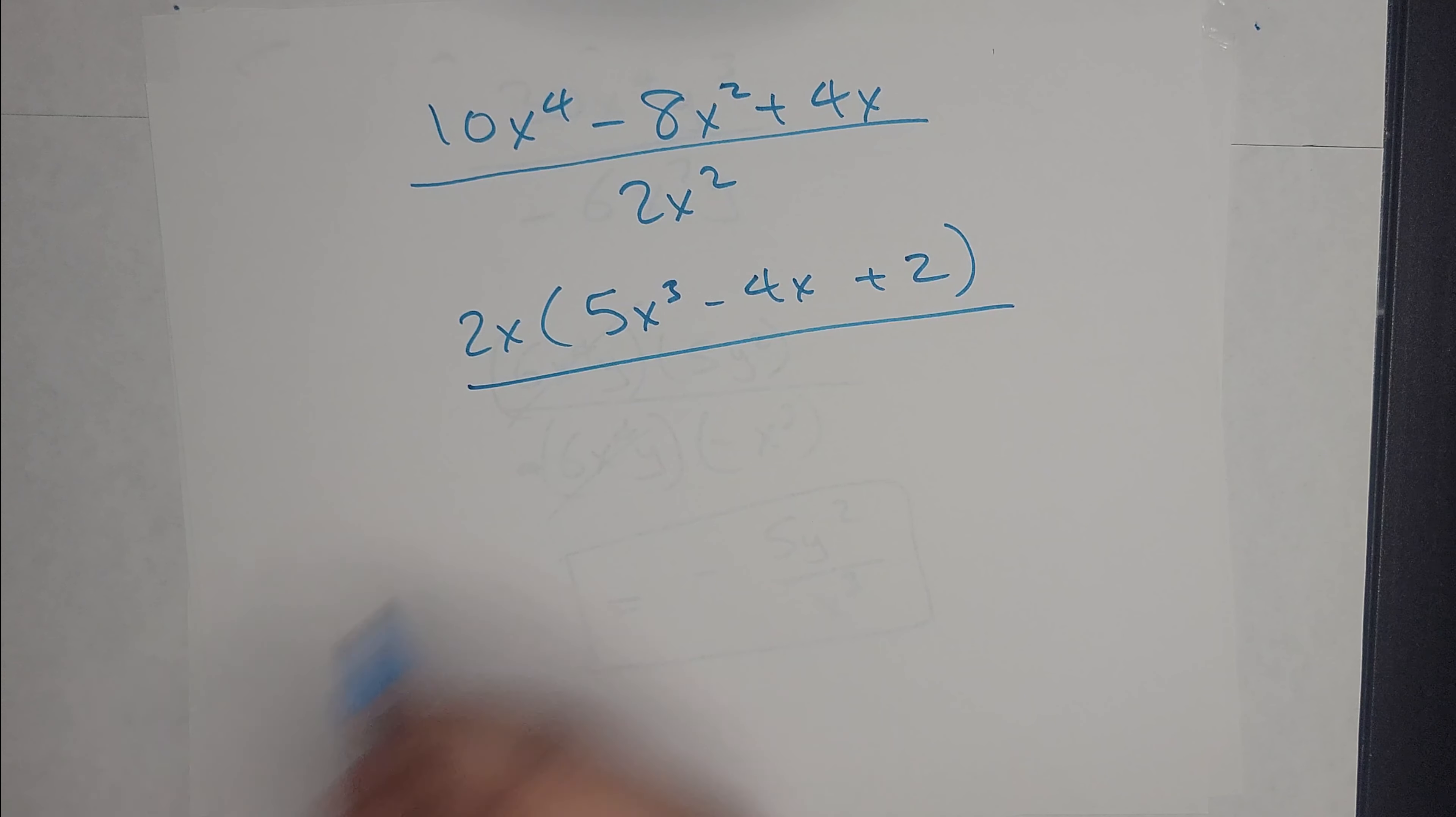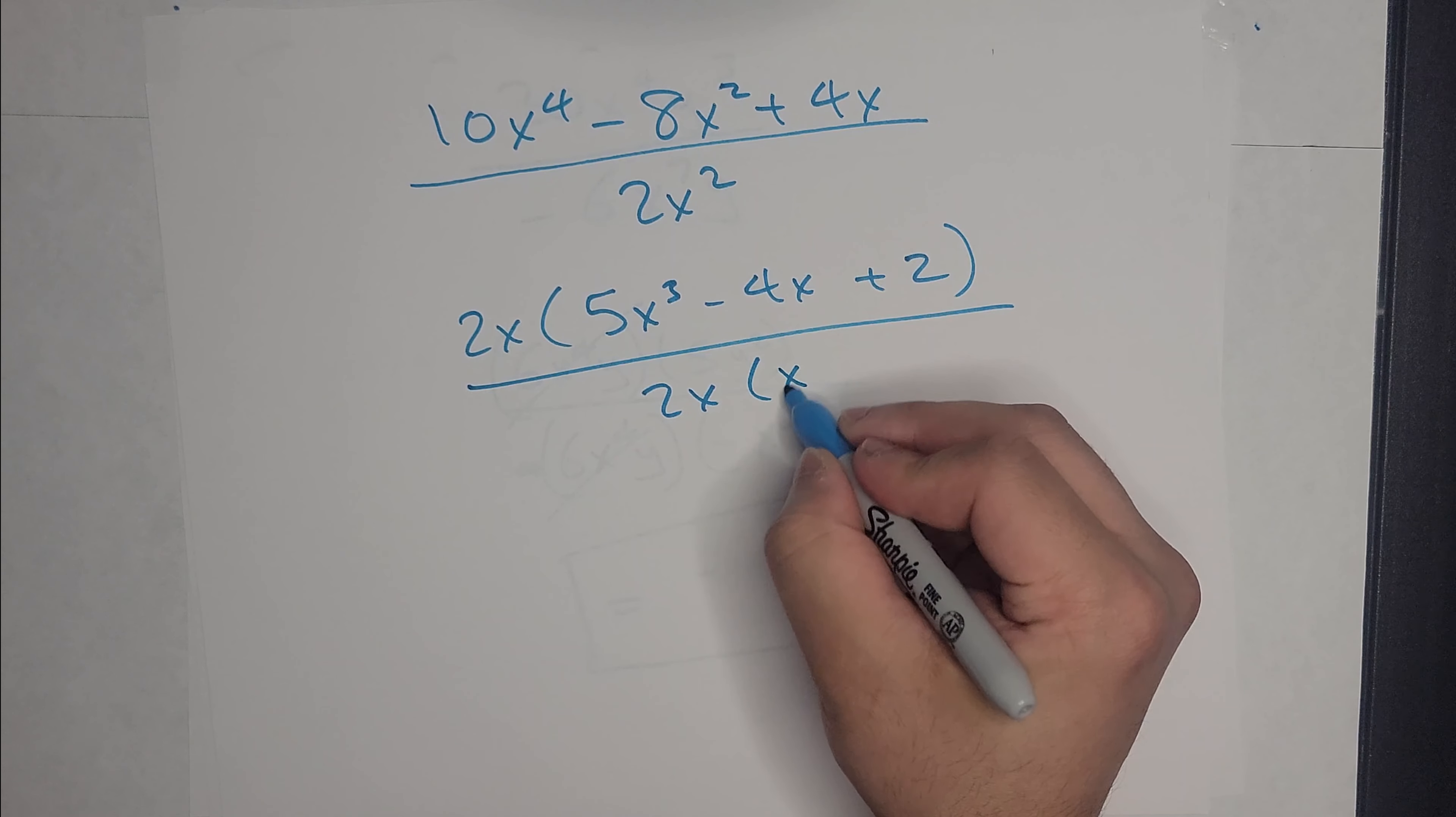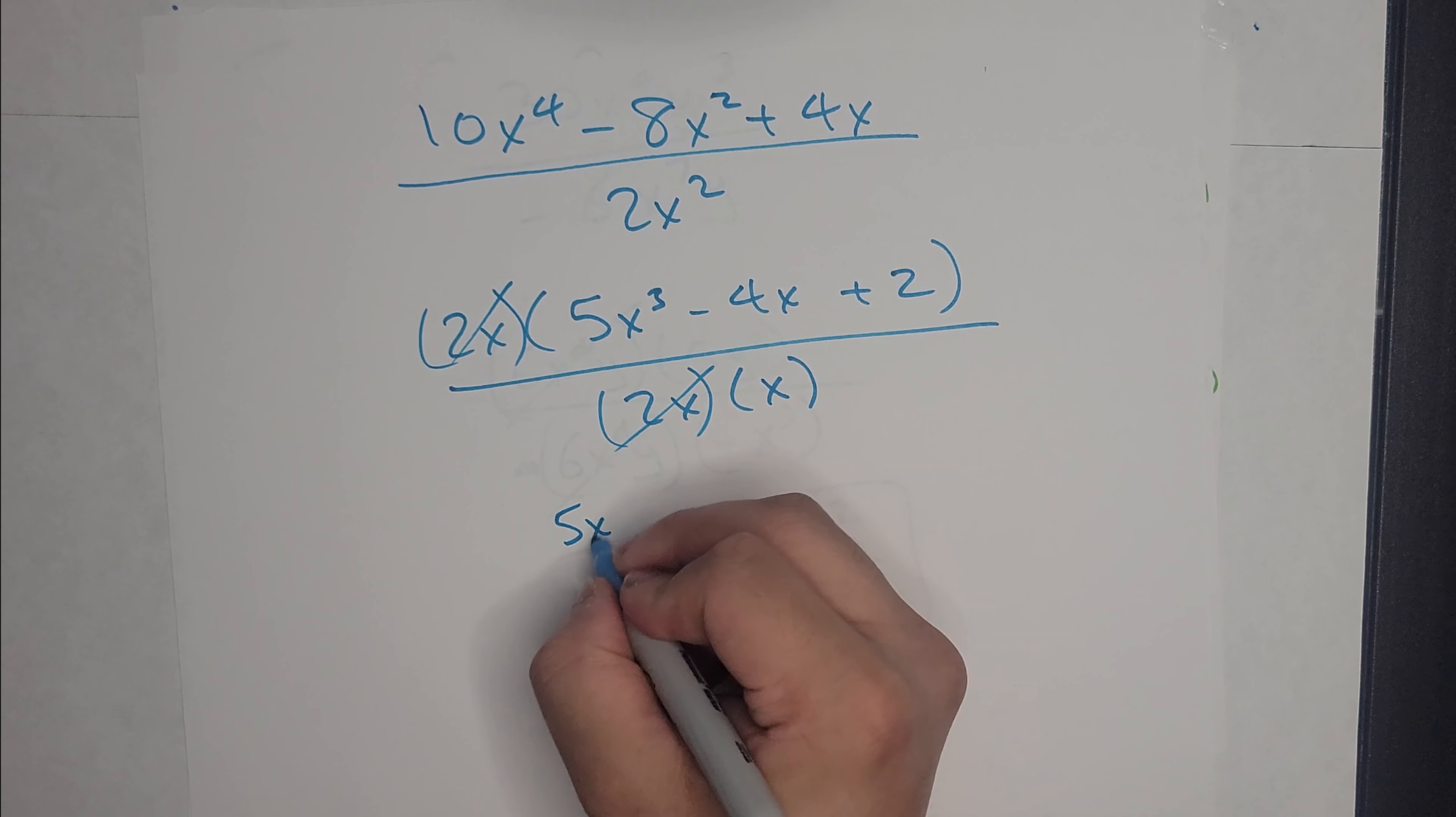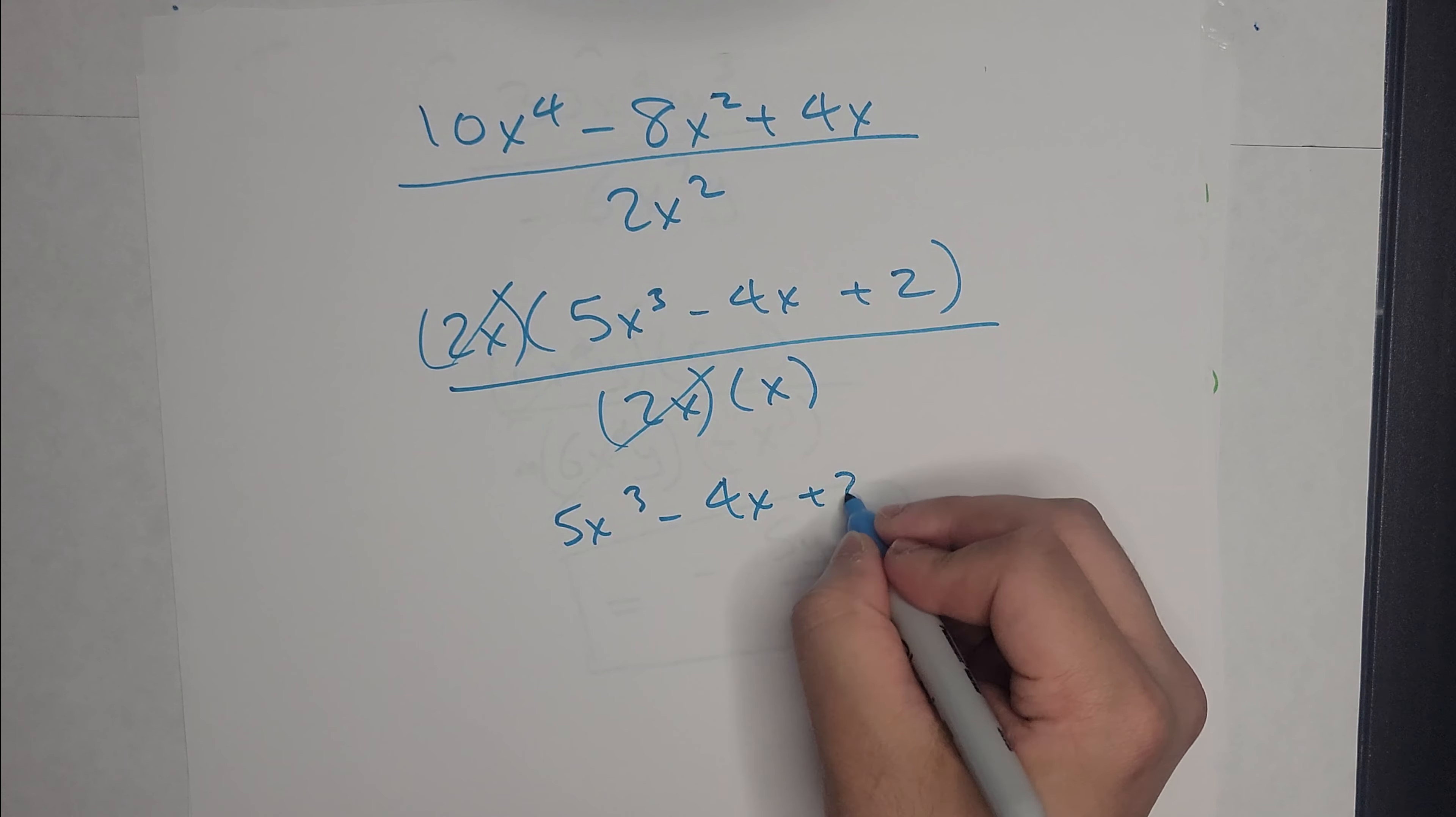And then the denominator, I can take out a 2x. And so this will cancel that. So I'm left with 5x³ - 4x + 2 over x. And that's that.